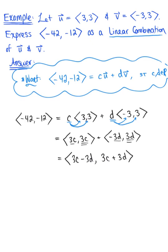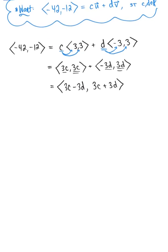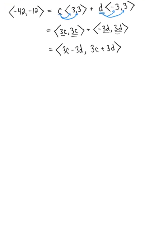All right, so we've simplified as far as we can go at this point. So in order to find these scalars c and d, we need to create a system of equations. So we create a system of equations by equating the like components.